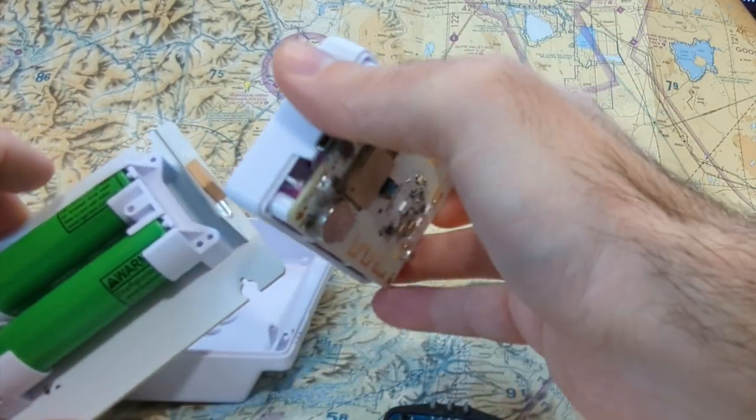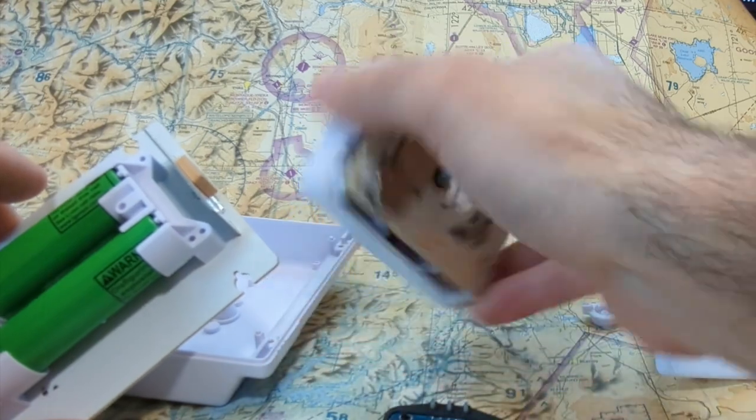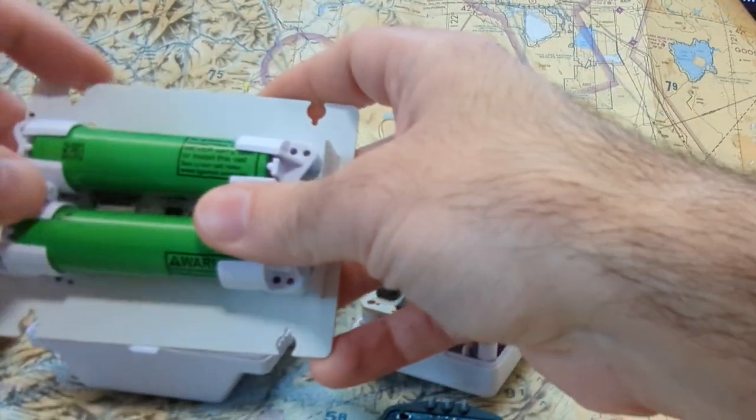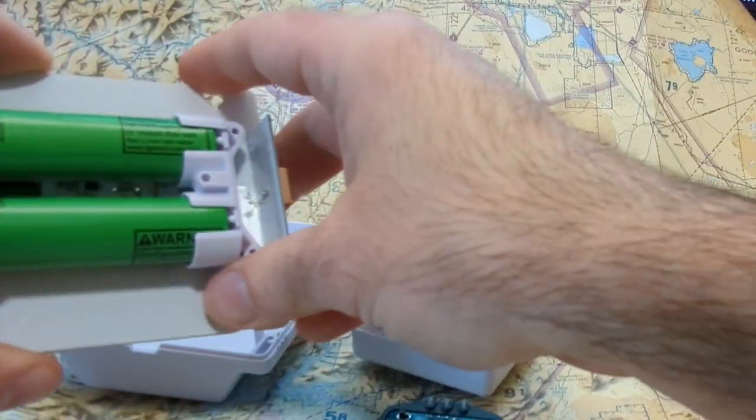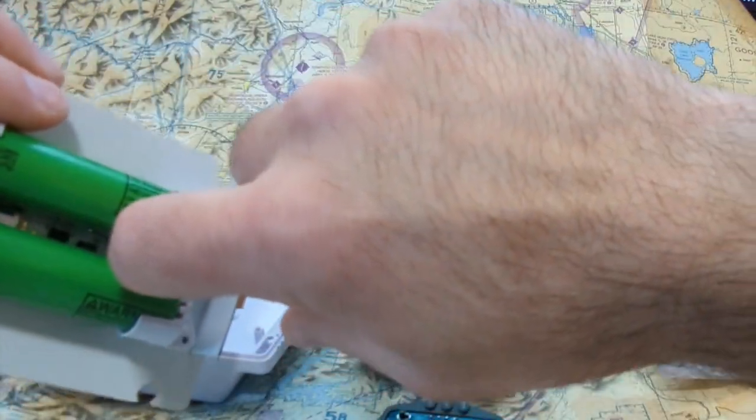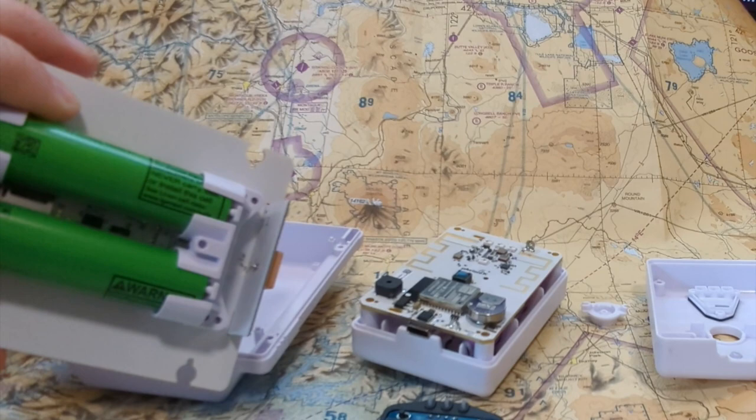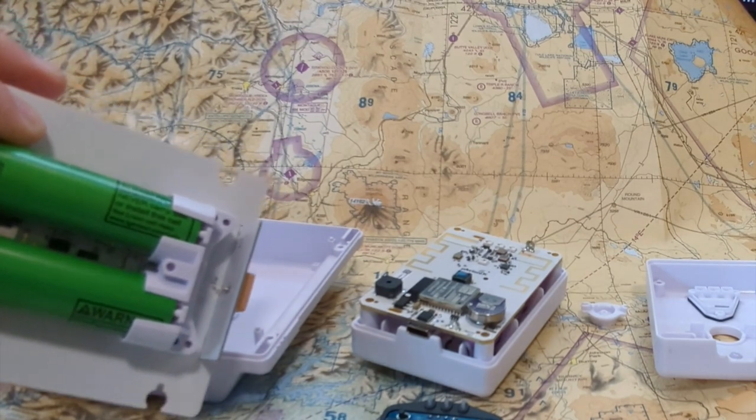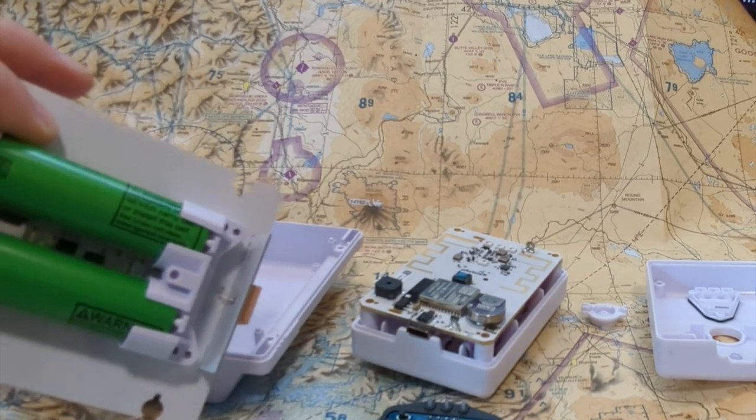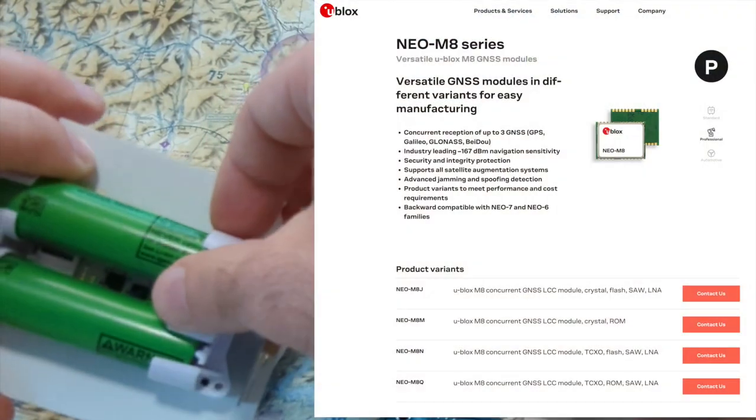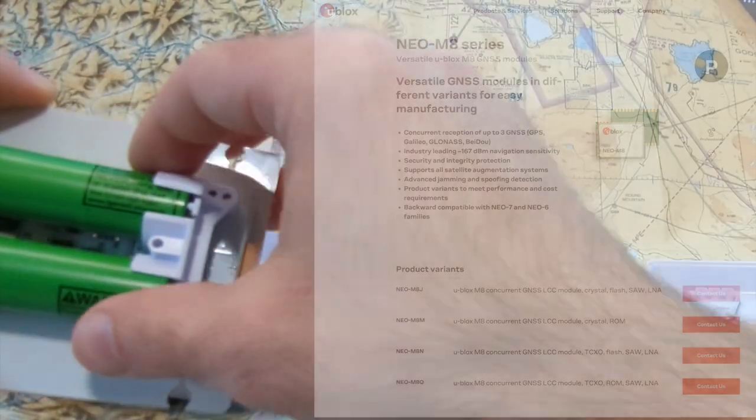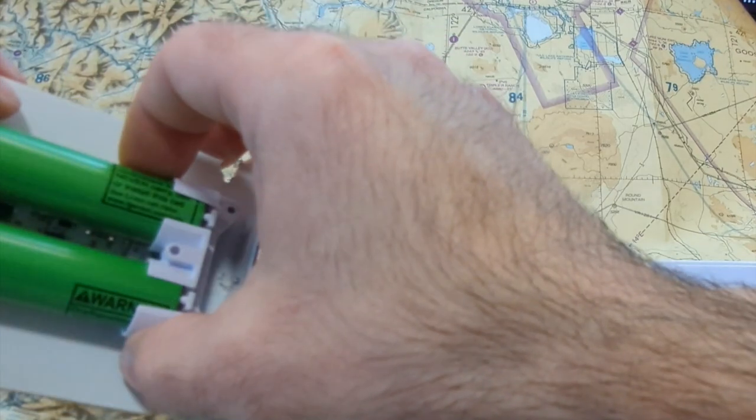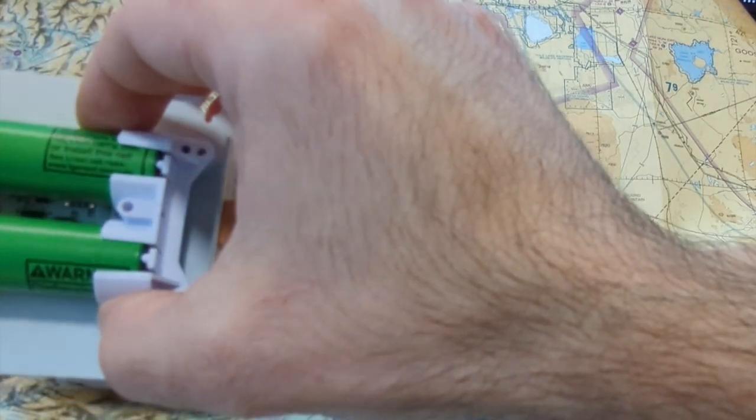Underneath there you can see some more components. There's an SD card which exists on both. The GPS chip is using the really nice NEO chip, which is actually the same between both devices. It's the Ublox NEO M8N. That's a nice GPS chip.